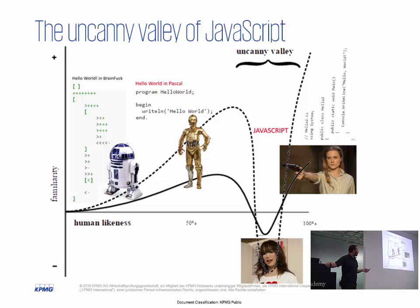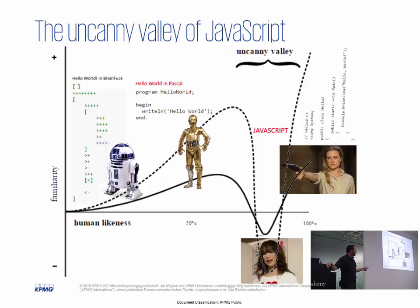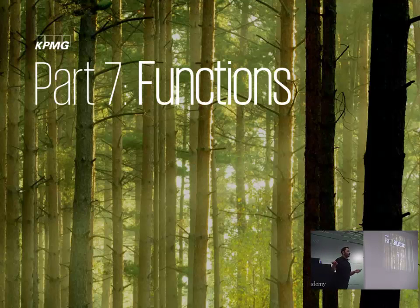Why did I put this here? Because what we've seen so far in JavaScript is going upwards on that scale. On the far end near R2D2, I put hello world in a language called Brainfuck — all symbols, nothing recognizable. Then hello world in Pascal, which looks more familiar. But today we'll talk about functions and objects in JavaScript, and there's a drop here — things work a little differently — before going up to something more like C sharp.